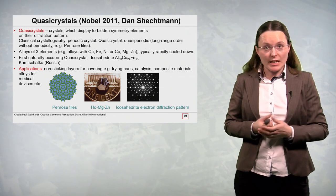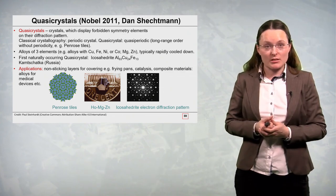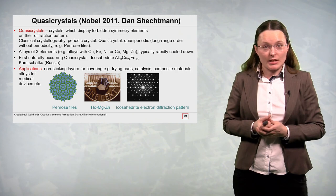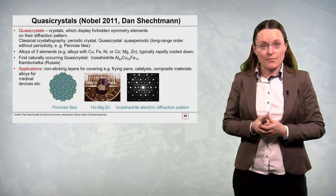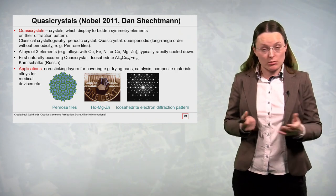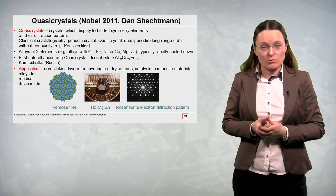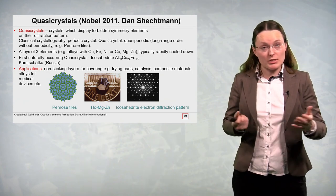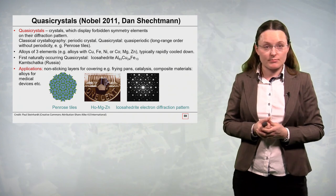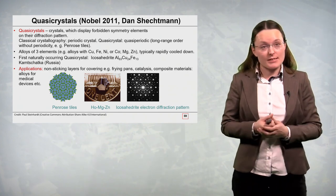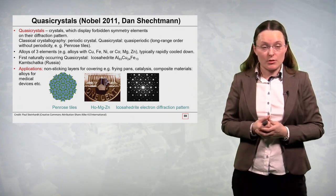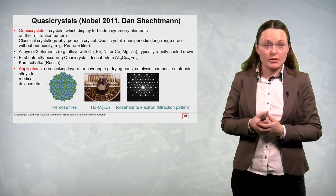So Dan Shechtman the Israeli scientist who discovered quasi-crystals had a very tough job to do. But finally owing to his persistence he managed to publish these ideas and he received the Nobel Prize in 2011.